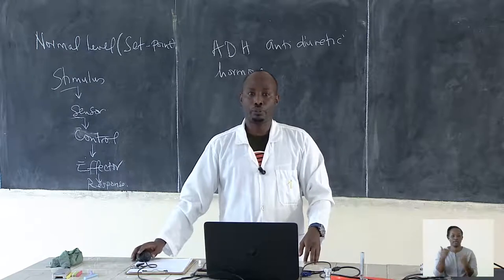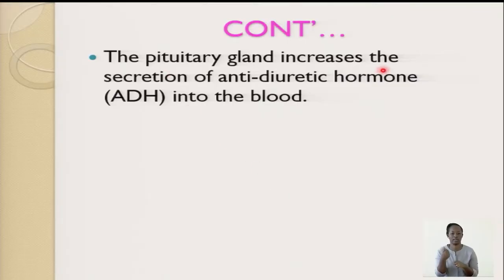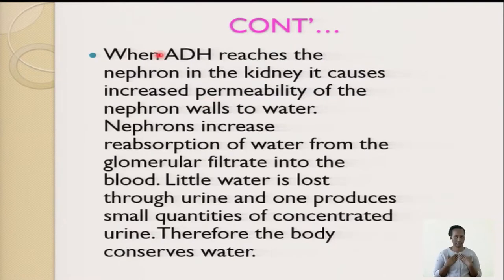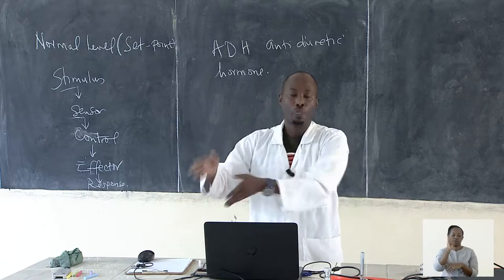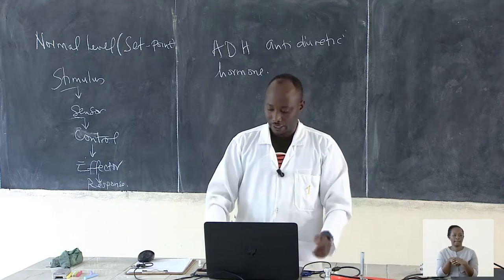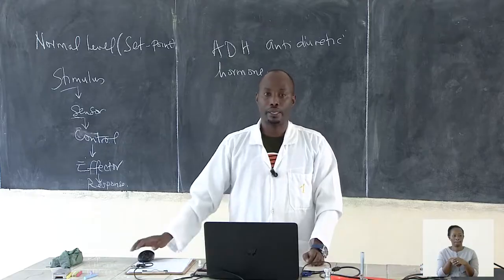The pituitary gland increases the secretion of antidiuretic hormone into the body. When ADH reaches the nephron in the kidney, it causes an increase in the permeability of the nephron walls to water, so the nephron performs reabsorption of water. This means that less water reaches the urinary bladder.